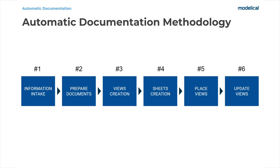It is based on six steps. First of all, we make an information intake from the model. Secondly, we prepare in spreadsheets the documentation we want to generate. Then we create the views automatically. We also create the sheets by automatic means. And we place the views on the sheets in the position we desire automatically as well. Finally, if some sheets layout changes, we can also update the position of those views. Let's see each step in depth.